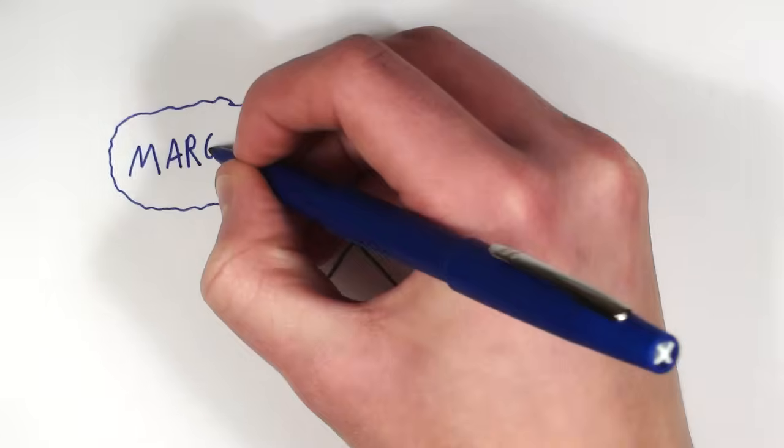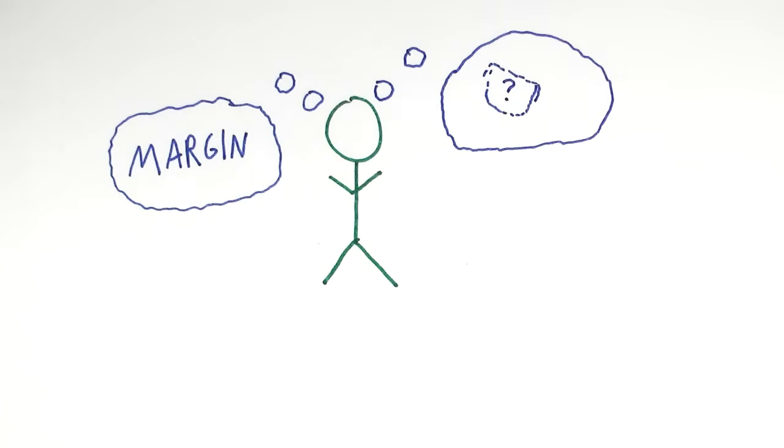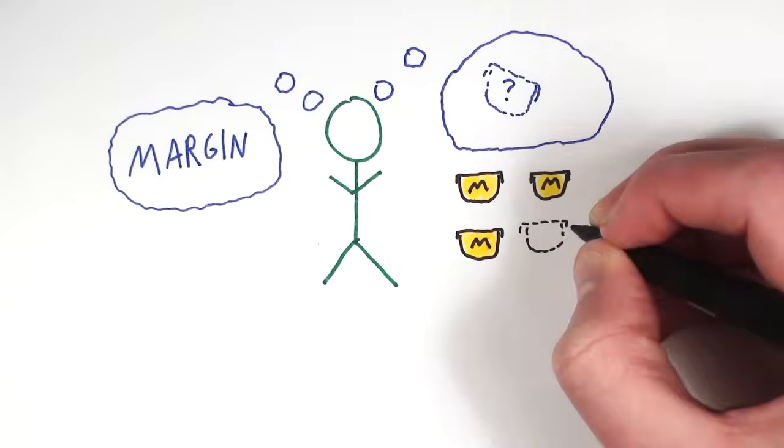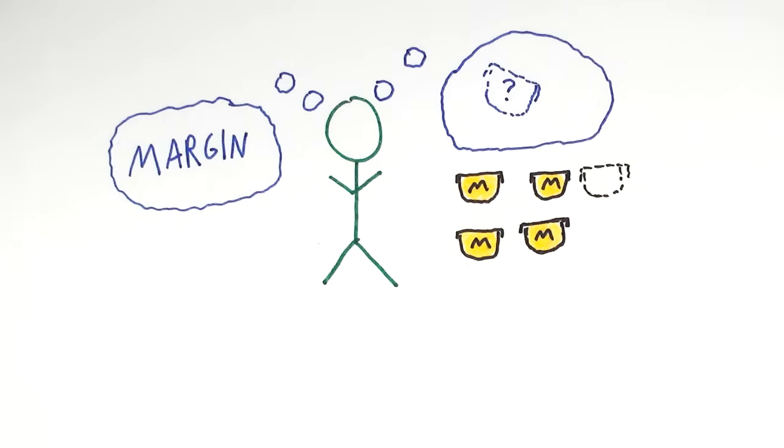See, in thinking on the margin, economists are thinking about the cost or benefit of making a decision. In this case, buying a fourth tub of margarine, then a fifth tub, and so on.